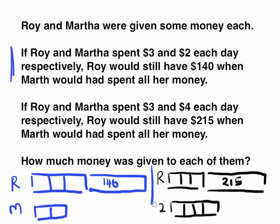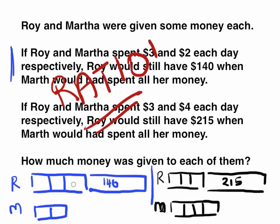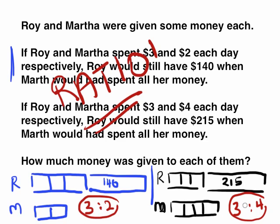So what does this mean? The keyword here is ratio and proportion. The proportion in case 1 is 3 to 2, and the proportion in case 2 is 3 to 4. What you want to do is make sure that both proportions look the same. Since Martha is the same in both cases, you multiply case 1 by 2 — so 3 times 2 equals 6. Dividing into 2 gives you Roy at 6 units to Martha's 4 units.